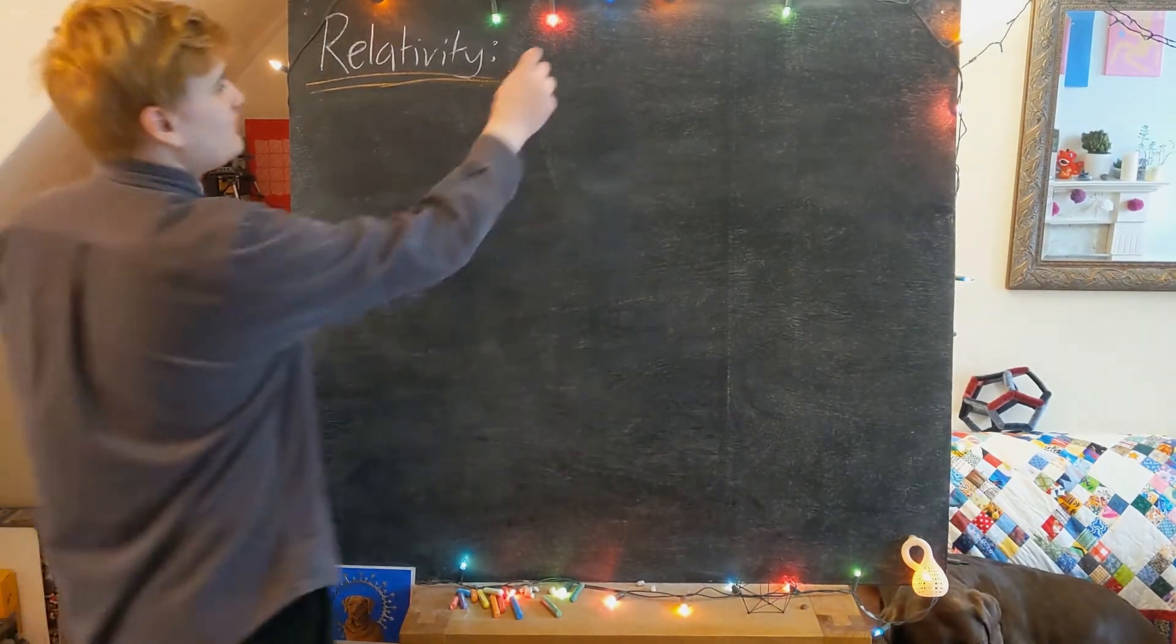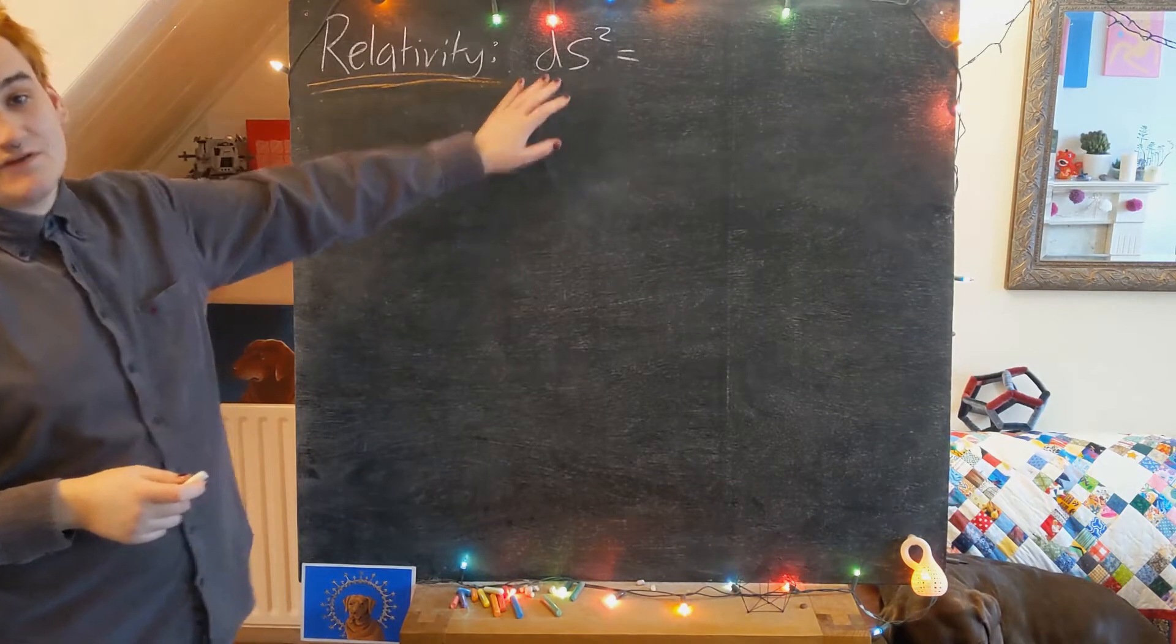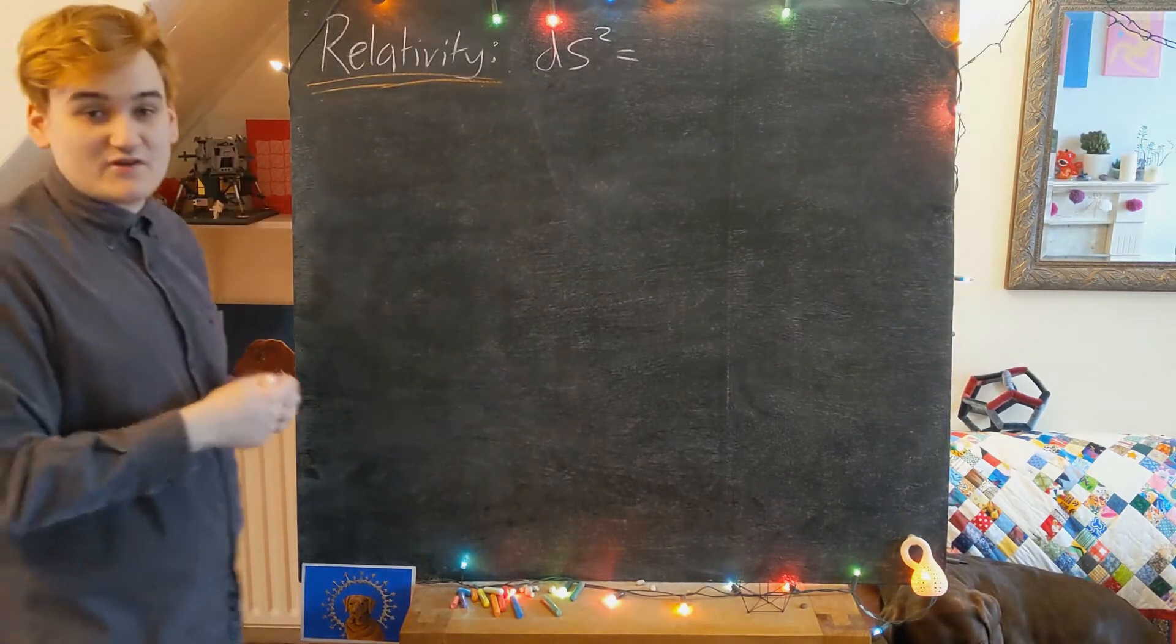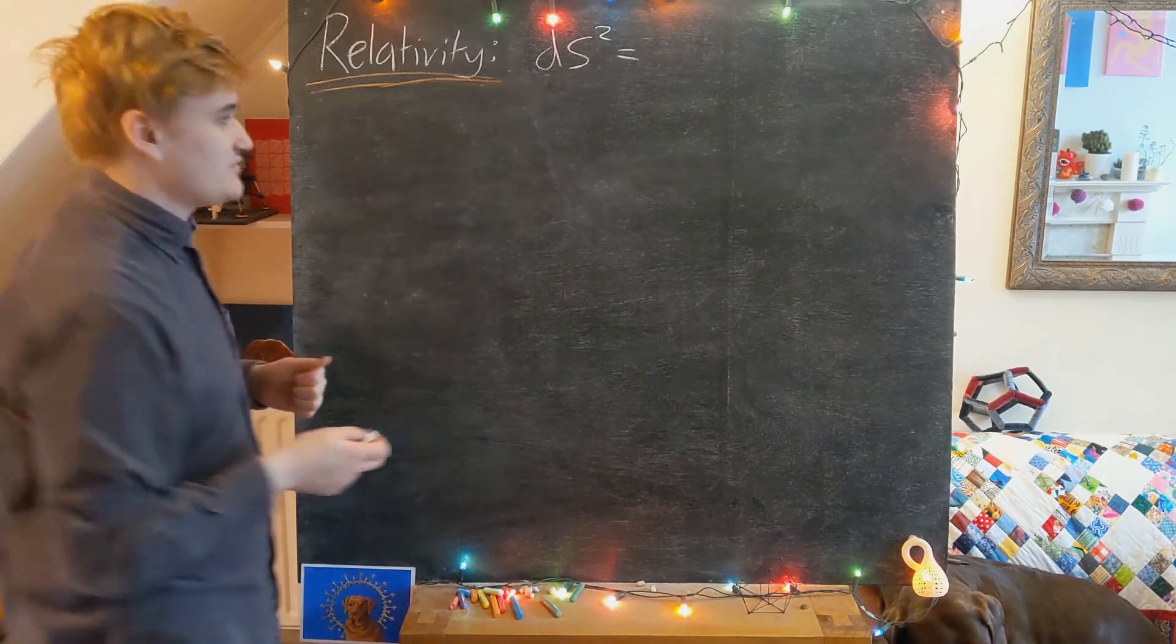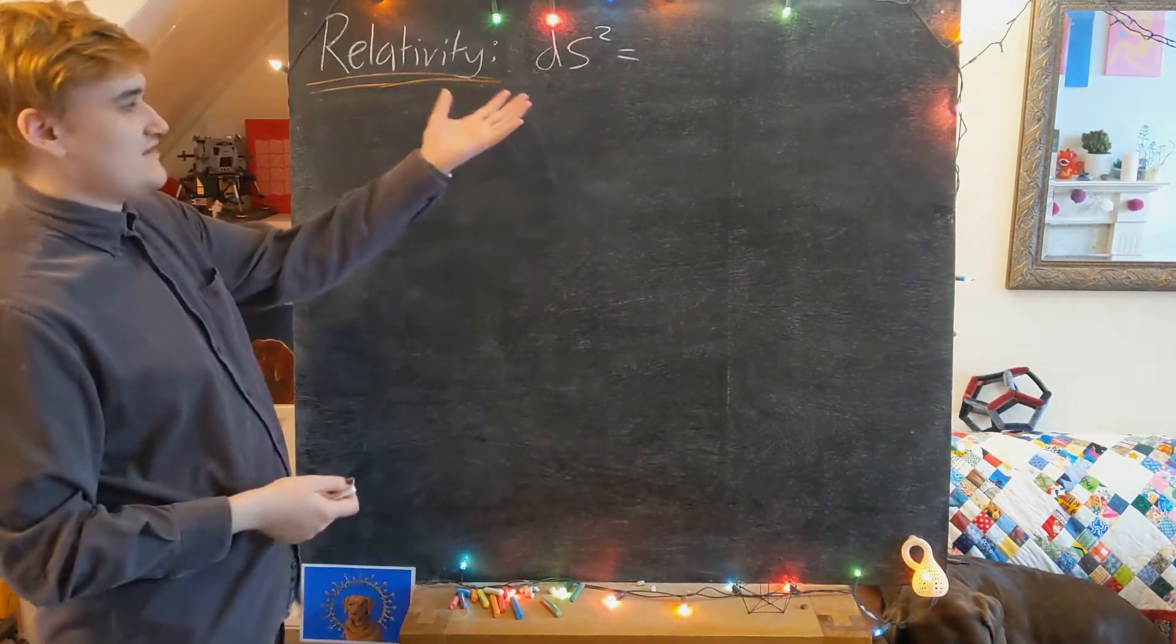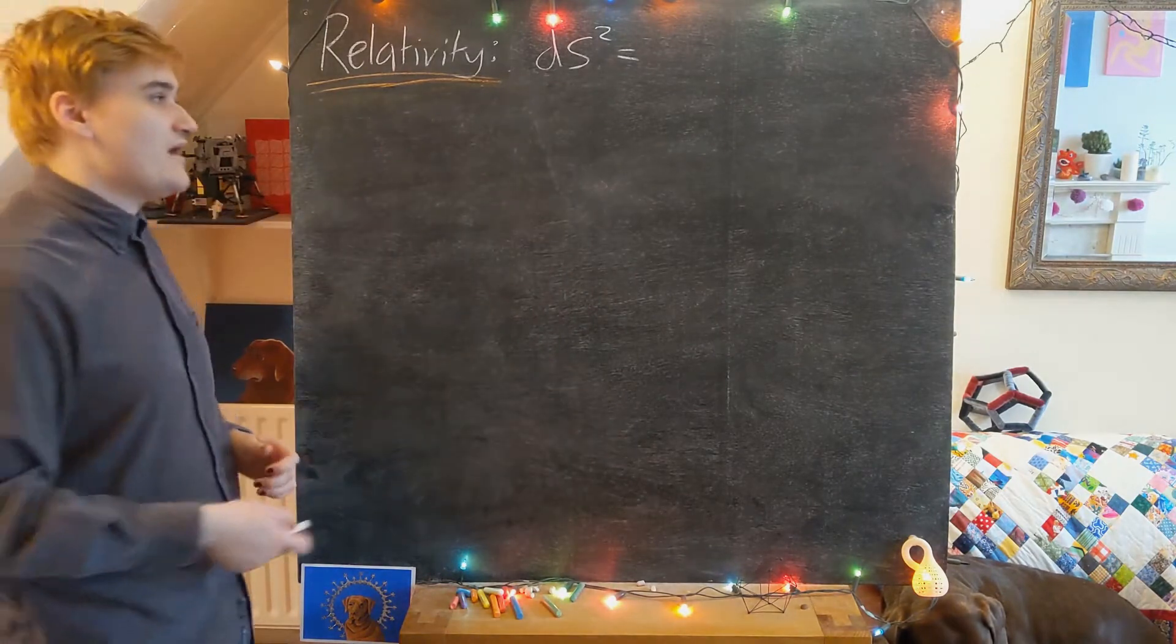As I've said, the metric we give by giving a line element which essentially expresses the infinitesimal distance between points in our geometry. We essentially express this quantity by just defining a tensor, the metric tensor.